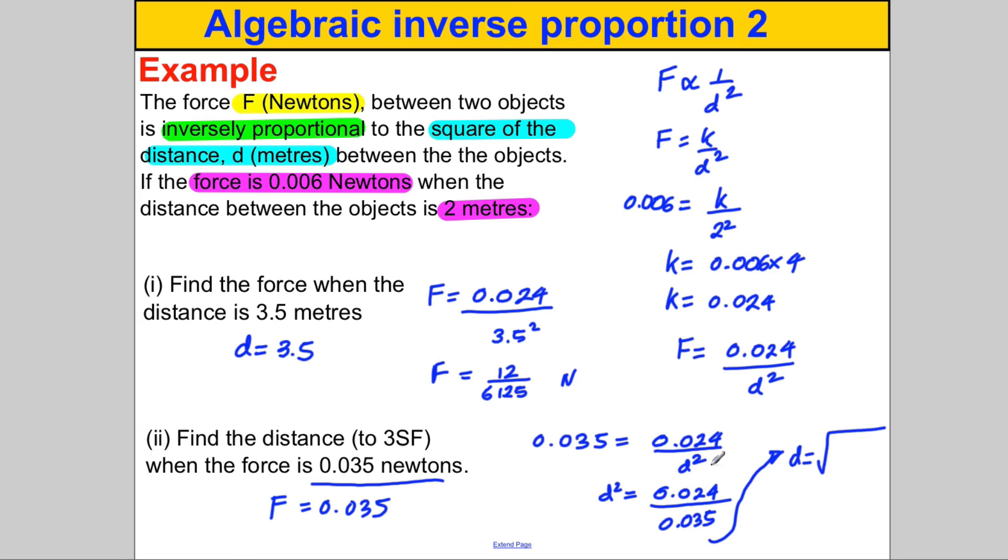0.024 divided by 0.035. So just hit the square root button, then hit the fraction button, and put 0.024 divided by 0.035. And I got myself for this one that D is therefore equal to 0.828 etc.